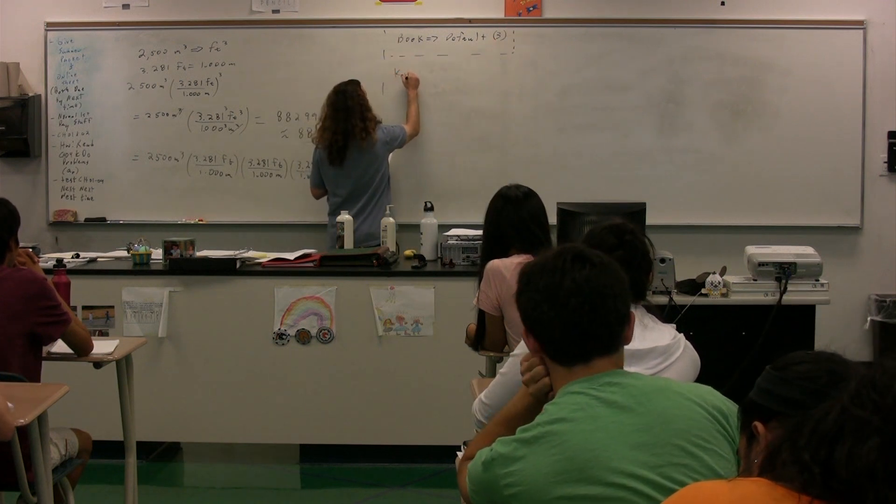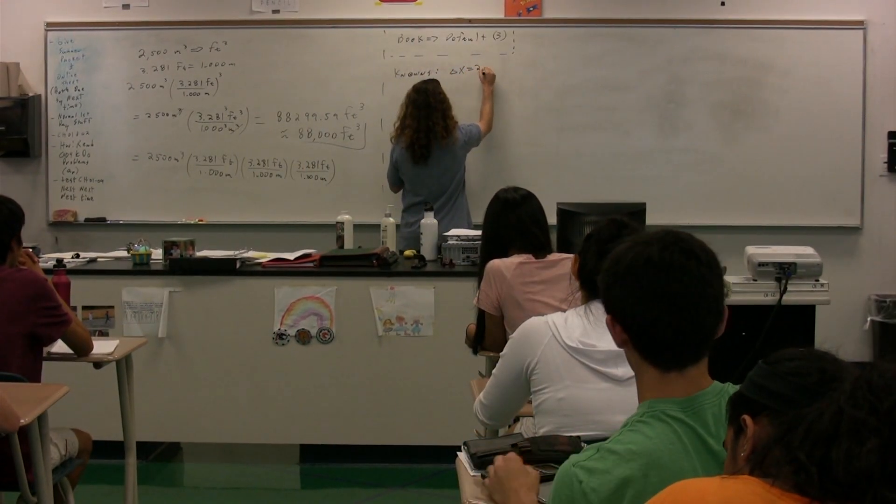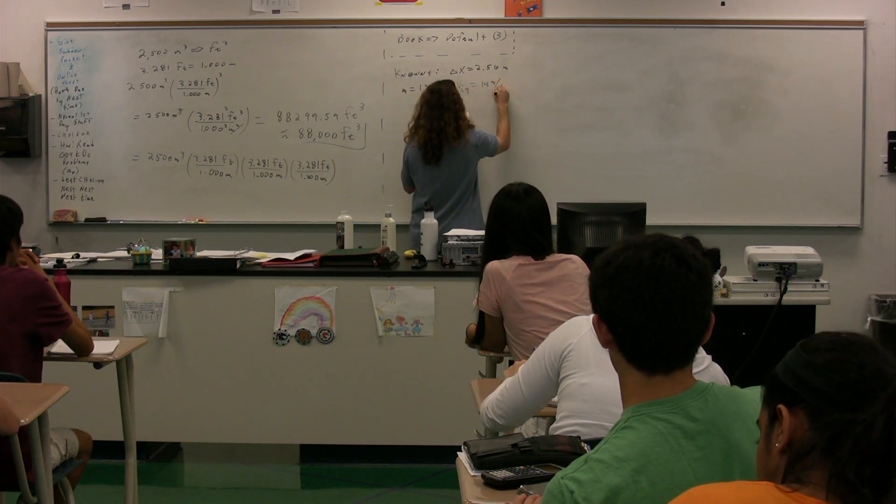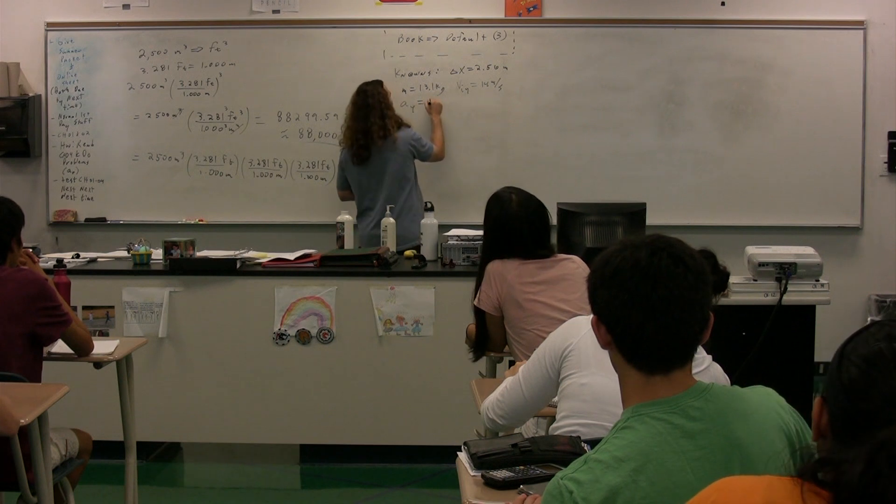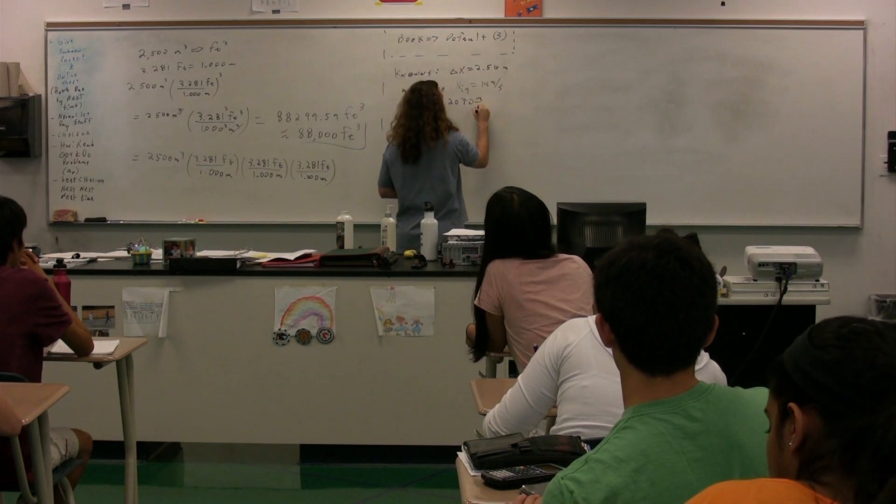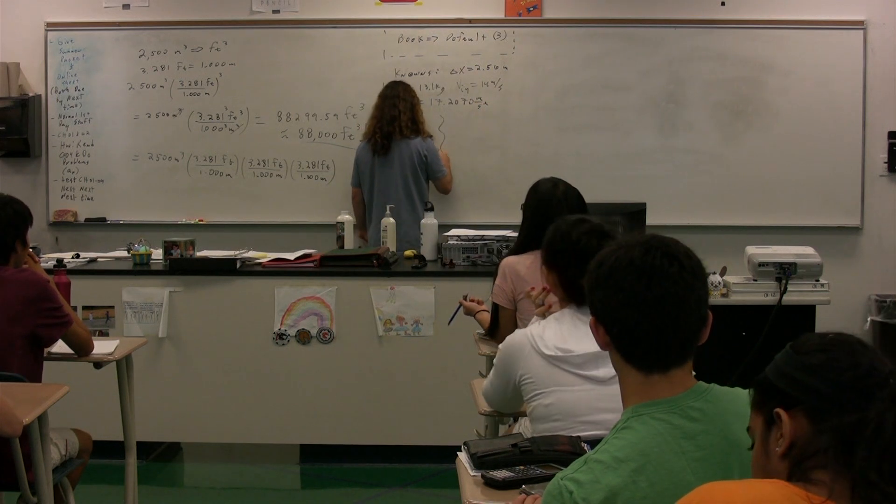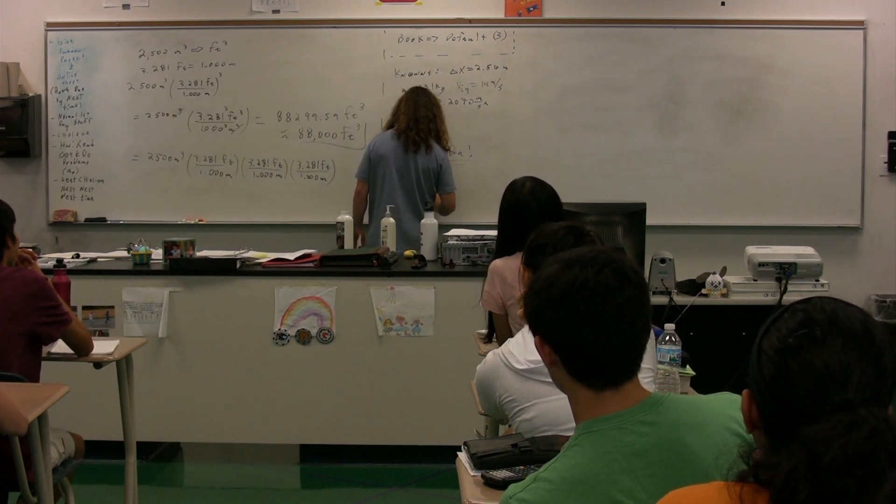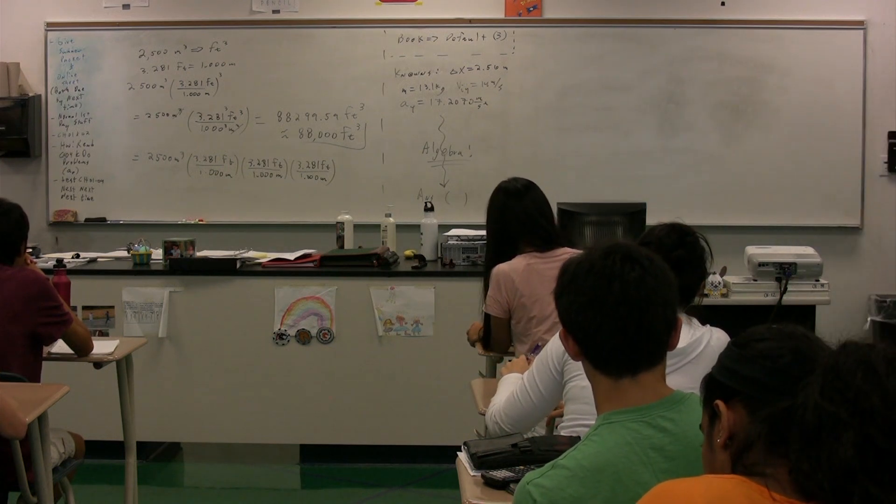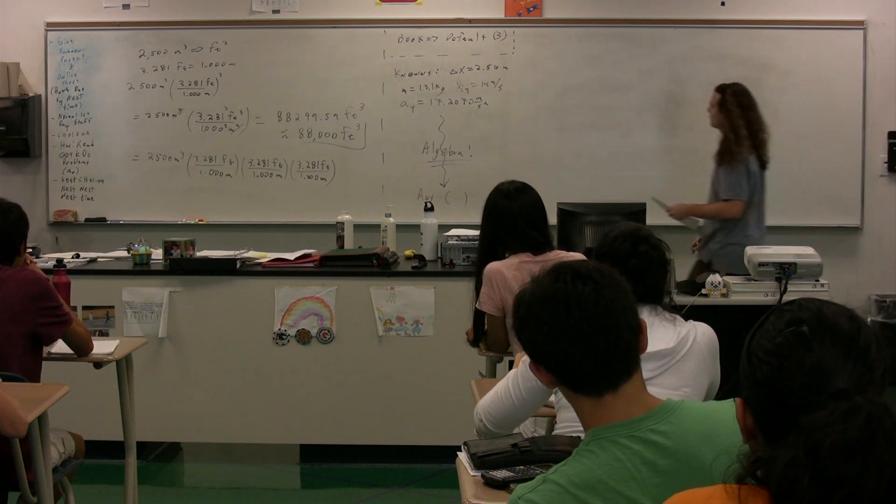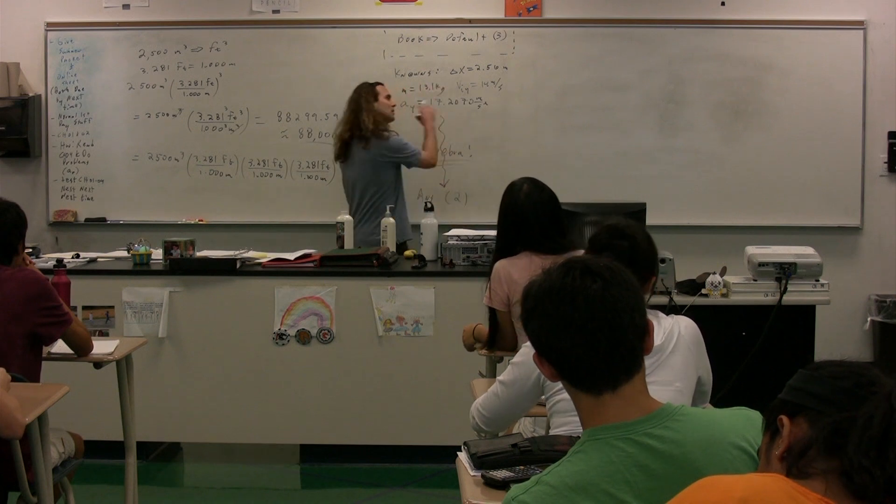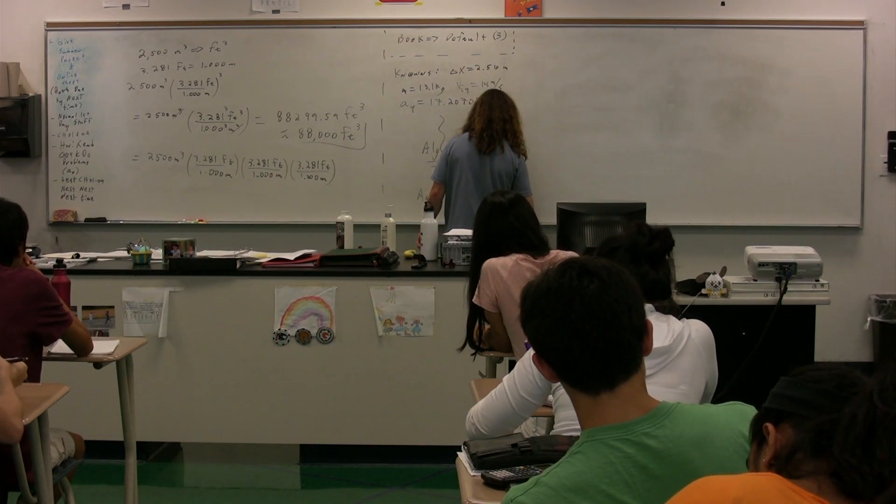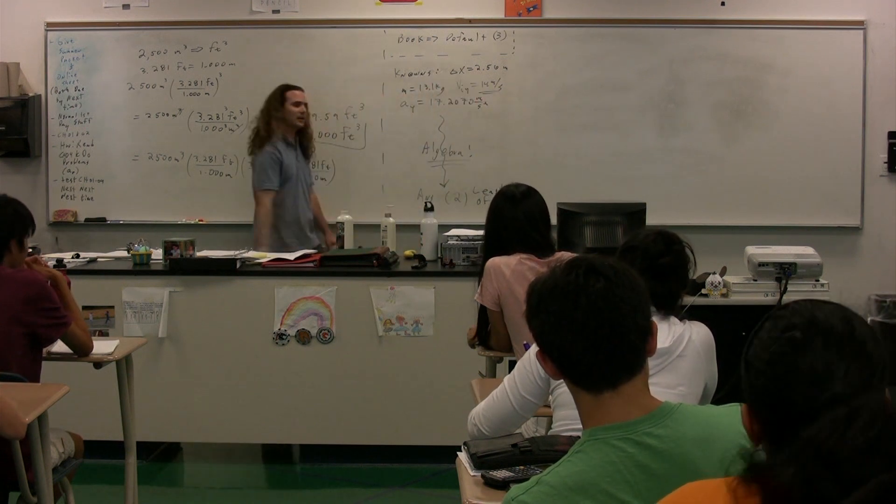Okay, so how do we work with sig figs? Let's say we have knowns, and we know the displacement is 2.56 meters, the mass of the object is 13.1 kilograms, the initial velocity in the y direction is 14 meters per second, and the acceleration in the y direction is 17.2070 meters per second squared. We do a bunch of stuff that I like to call algebra, even though some of you did some stuff I call magic on your quizzes. We come to an answer. How many sig figs should our answer have? Two. Two. How did you get that? From the velocity initial. And why did you choose the velocity initial? You go with the least number of sig figs from your knowns. So because the velocity initial only has two, your answer is also going to have two.